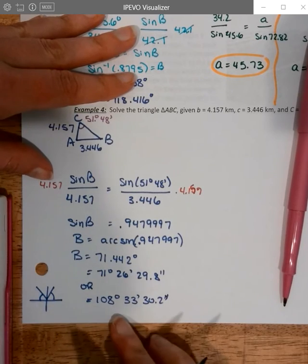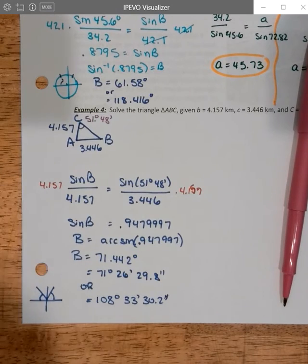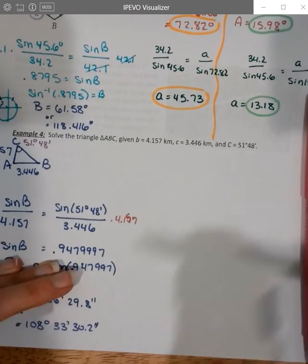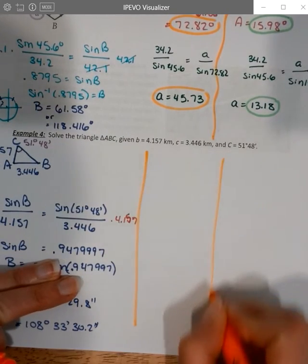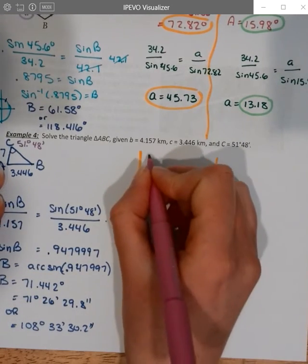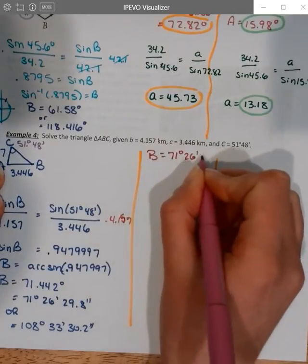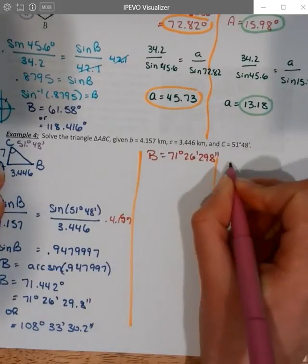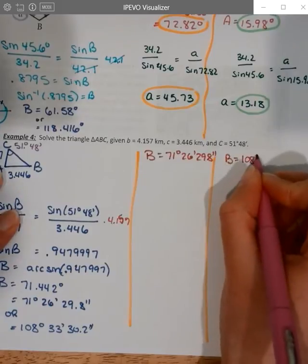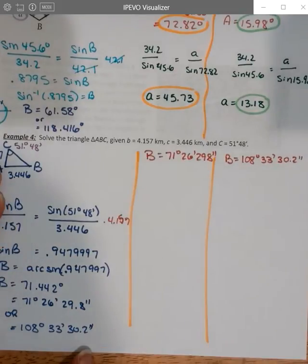Okay. So we have two possibilities for B. So we're going to separate our page and work through both of those to find if we can complete the triangle with both possibilities. Okay. So the first option is going to have that B angle of 71 degrees, 26 minutes, 29.8 seconds. And the second possibility has the B angle of 108 degrees, 33 minutes, 30.2 seconds.